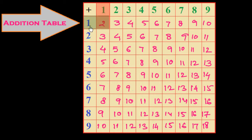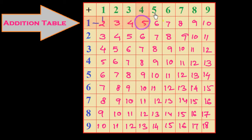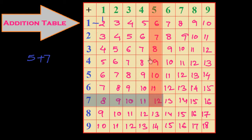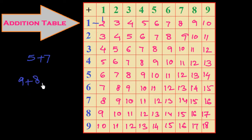Now I explain how this addition table works. One plus one is two; two plus one is three; three plus one is four; four plus one is five; five plus one is six. If you have to find out five plus seven, look at five and seven in this table and you get twelve. Here is seven and this one is five. For nine plus eight, look at nine and eight — you get seventeen.